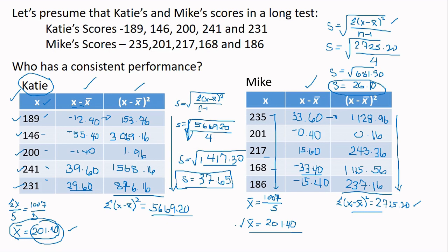So we now have the two standard deviations. Katie's standard deviation is 37.65. Mike is 26.10. So who performed better? In standard deviation class, the smaller the SD, the more consistent the performance is. So whoever has the smaller standard deviation, the more consistent their performance. The smaller is Mike. Therefore, Mike performed better than Katie. So that's it for the application of your standard deviation.